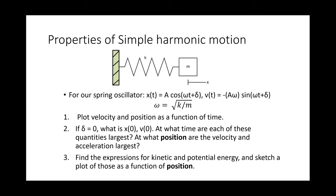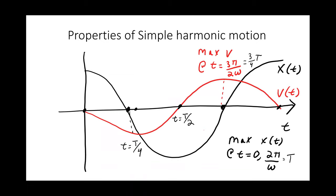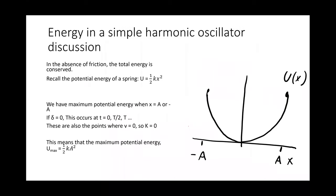The next problem involved plotting velocity and position as a function of time for a spring oscillator. The position looks like a cosine function; the velocity looks like a negative sine function. At time zero, velocity is zero and position is far from equilibrium. At a quarter period, position crosses zero — the object is back at equilibrium — and velocity is at its maximum. So when position is far from equilibrium, velocity is small; when position is at equilibrium, velocity is large.